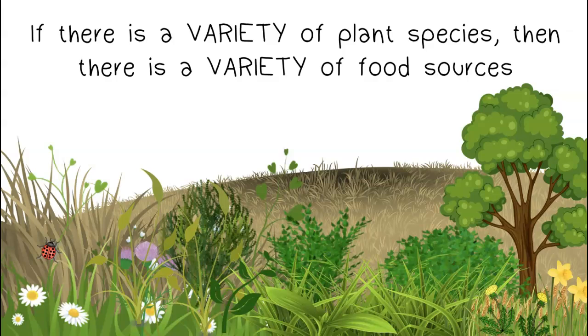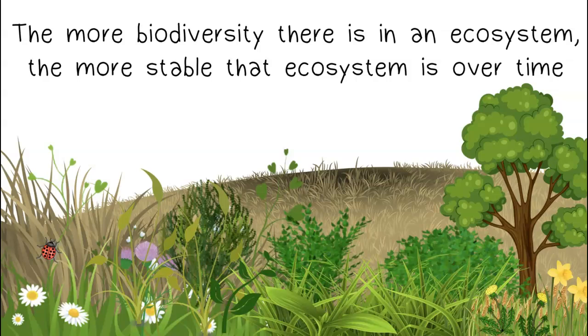If there is a variety of plant species, then there is a variety of food sources. The more biodiversity there is in an ecosystem, the more stable that ecosystem is over time.